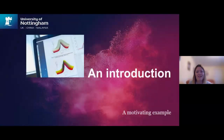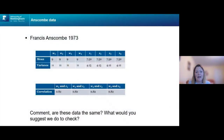Our first motivating example: we're going to look at data by Francis Anscombe from 1973. W1 is essentially 11 numbers, and the mean of these 11 numbers is 9 and the variance is 11.